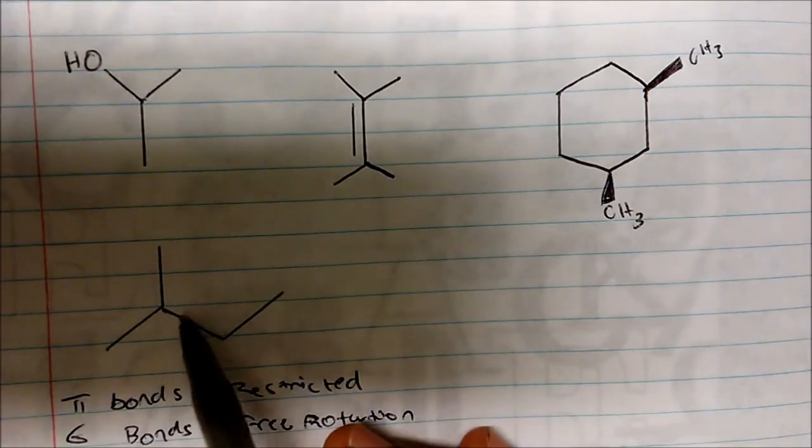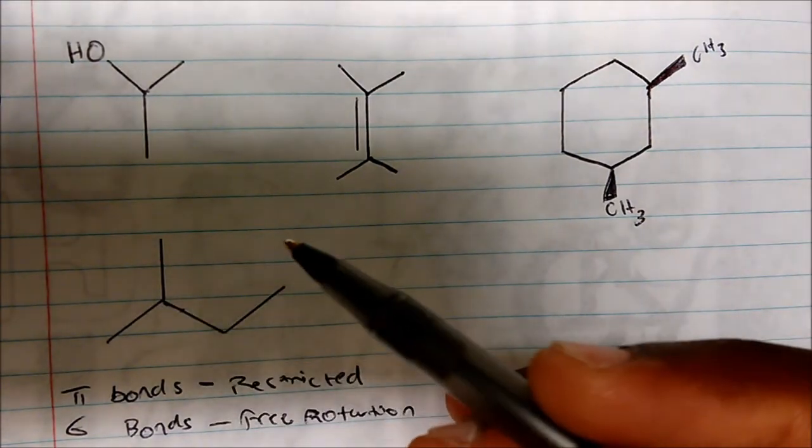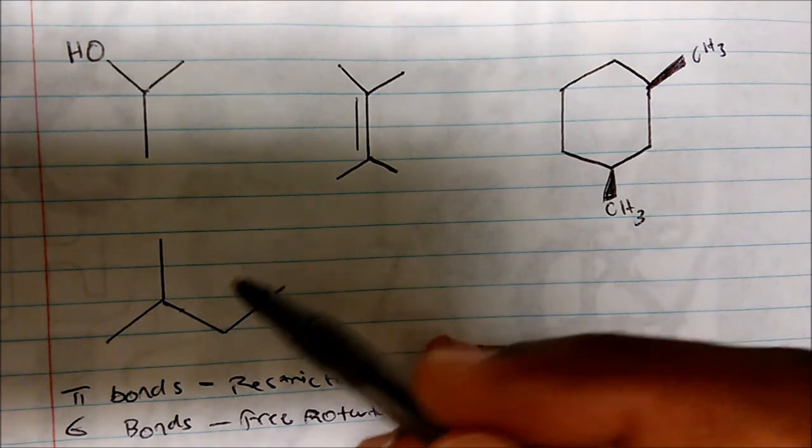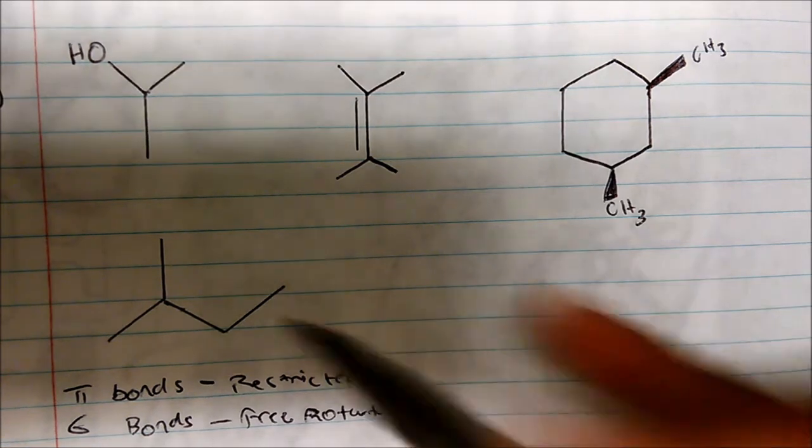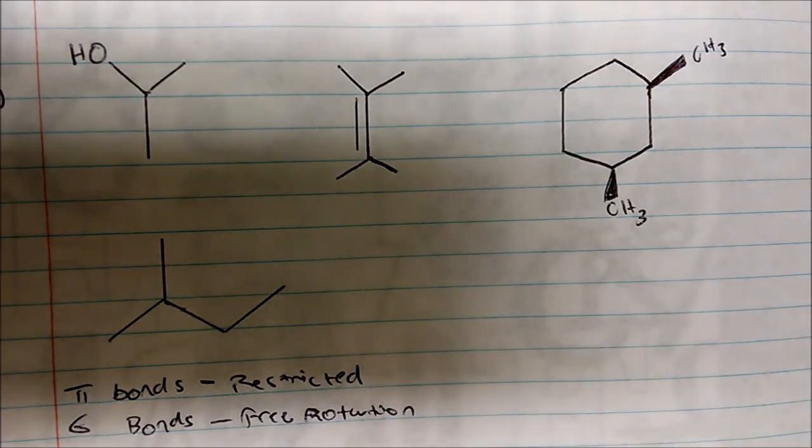Again, taking a look at this, all our carbons have free rotation. There's three different things bonded to each of these carbons. There are no pi bonds. So pi bonds are what we're looking for, and those are restricted.